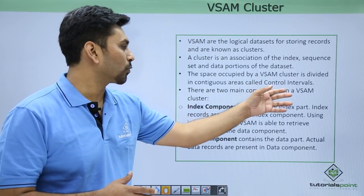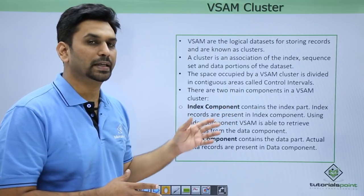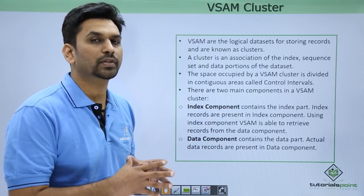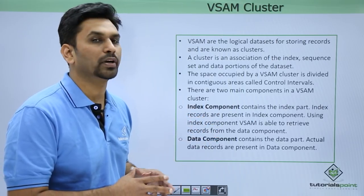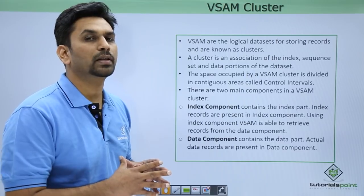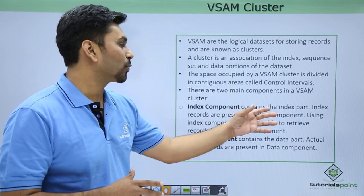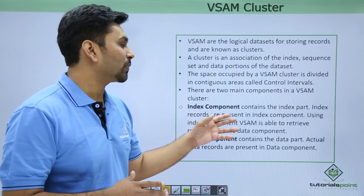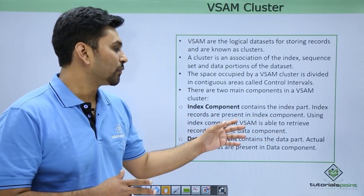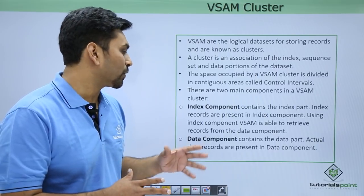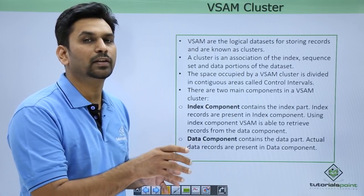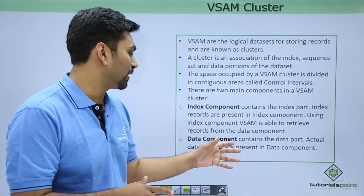There are two types of components in a VSAM cluster: the index component and the data component. It is not necessary that all VSAM files will have an index component — the index component is present only for KSDS files, which we will learn about in coming videos. The index component contains index records, and using the index component VSAM is able to retrieve records from the data component. That is why we can simply provide a key and it will fetch the record.